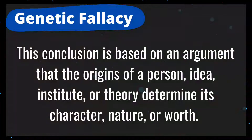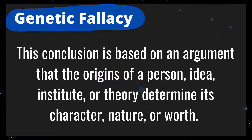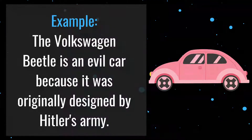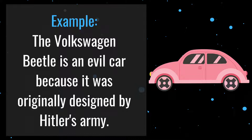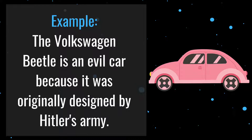Number 4 is genetic fallacy. This conclusion is based on an argument that the origins of a person, idea, institute, or theory determine its character, nature, or worth. For example: the Volkswagen Beetle is an evil car because it was originally designed by Hitler's army. In this example, the author is equating the character of a car with the character of the people who built it. However, the two are not inherently related.